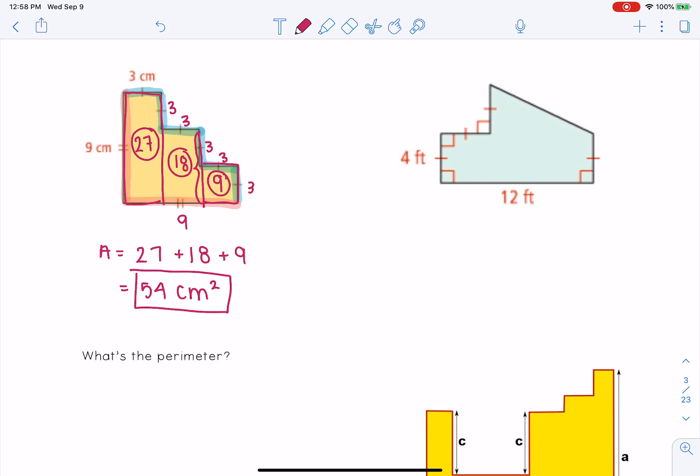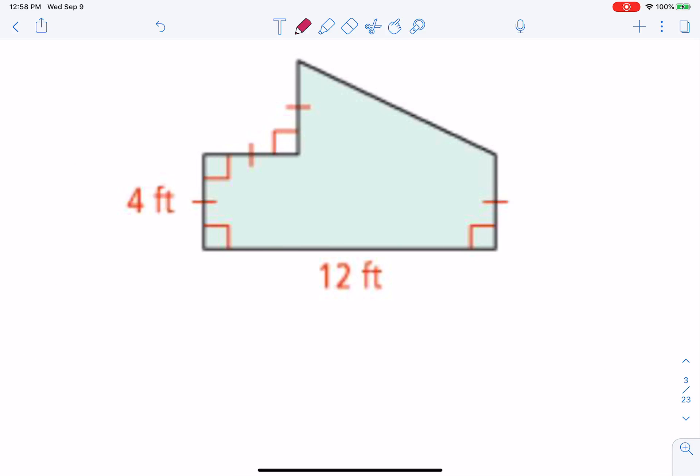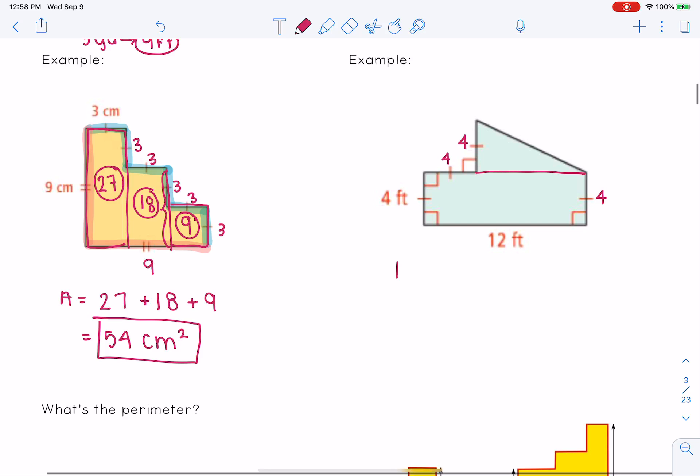The same thing for this next problem. These are 4, and the bottom is 12. I can see this as a triangle sitting on top of a rectangle. This triangle, we know it's 4. We have to figure out this base. Well, if this is 4 and the whole thing is 12, this base has to be 8. And our area is 1 half base times height, or 1 half 4 times 8, which will give us 16 feet squared.